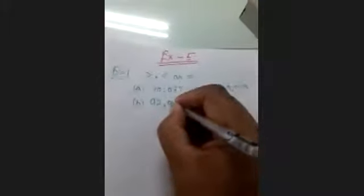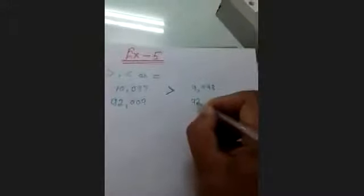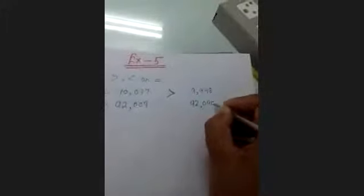Next is Part B: compare 92,009 and 92,090. The place values at the higher positions are the same. Then comparing the next place values, we have 9 on one side and 90 on the other. So 9 is less than 90, meaning 92,009 is less than 92,090.